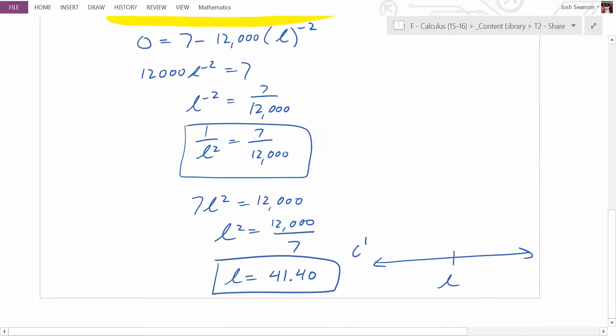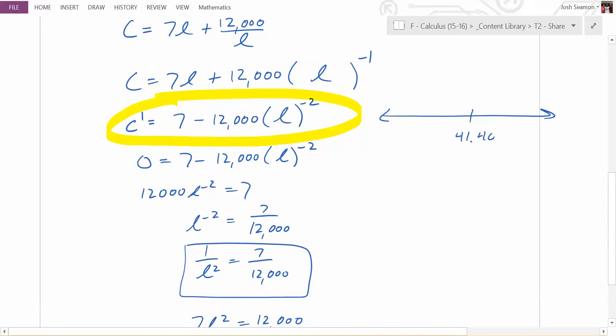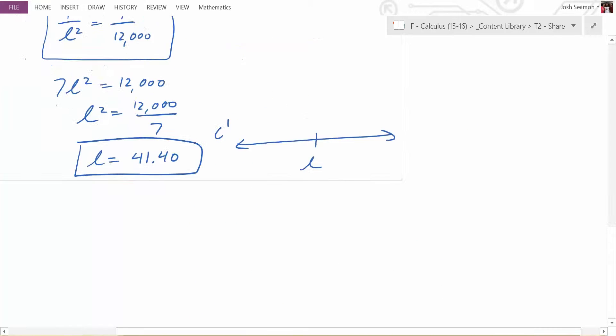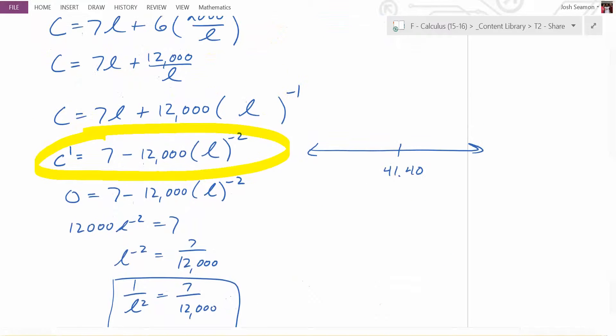So you need to test either side of this. You need to test the left side. And you need to test the right hand side. In that function right there, C prime. Test that for me and tell me. You want to know if it's positive or negative. So plug in a number to the left of 41, plug in a number to the right of 41, and tell me if this is positive or negative. Do that right now.